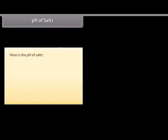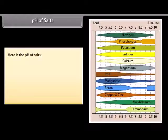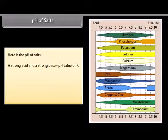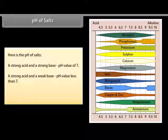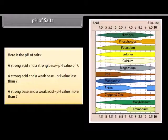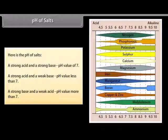The pH of salts depends on the strength of the acid and base that formed them. A strong acid and a strong base produce a salt with a pH of 7. A strong acid and a weak base produce a salt with a pH less than 7. A strong base and a weak acid produce a salt with a pH greater than 7.